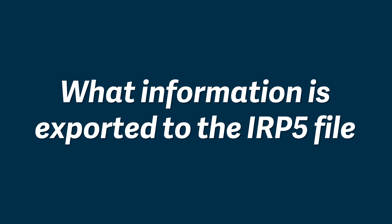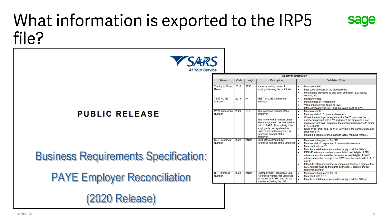Before we look at the actual process of generating the file, let's have a quick overview of the information that's exported to the IRP-5 file. Many of you might have come across the word Business Requirement Specification, or BRS for short. This is a SARS document that outlines what the general rules are for the import file structure and also the actual file layout. Irrespective of the payroll system you use, this document specifies the layout required.